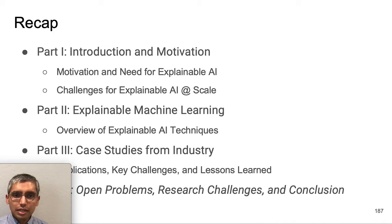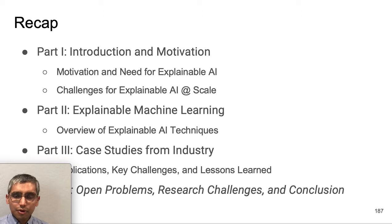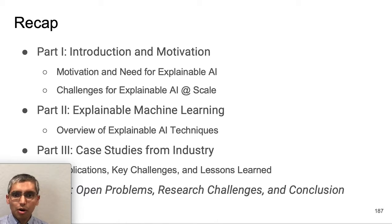In the second part we gave an overview of different classes of explainable machine learning techniques. These can be subdivided into techniques for building intrinsically interpretable models as well as techniques for providing post hoc explanations to black box models. For the latter, we further subdivided into techniques for explaining the prediction of a model for one instance at a time, versus techniques for explaining the performance of a model as a whole.